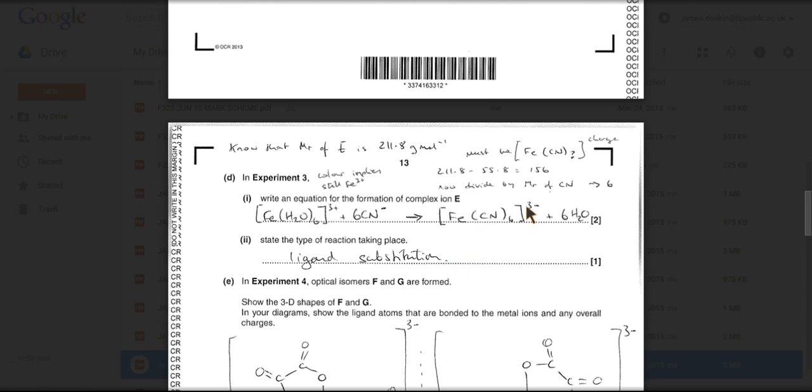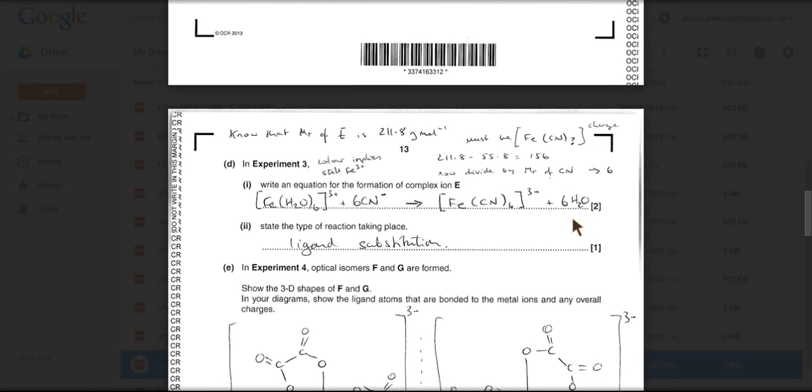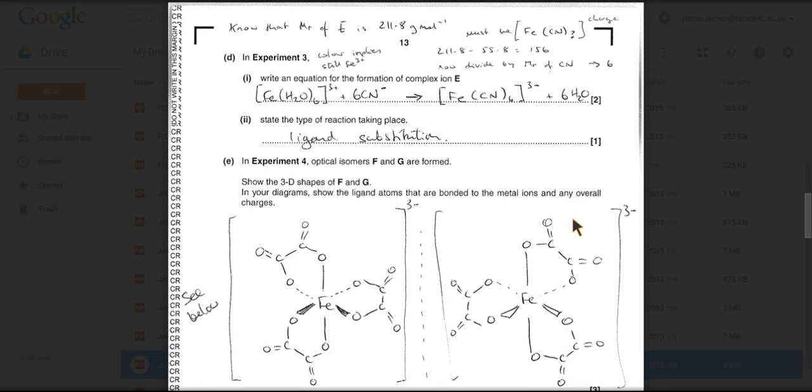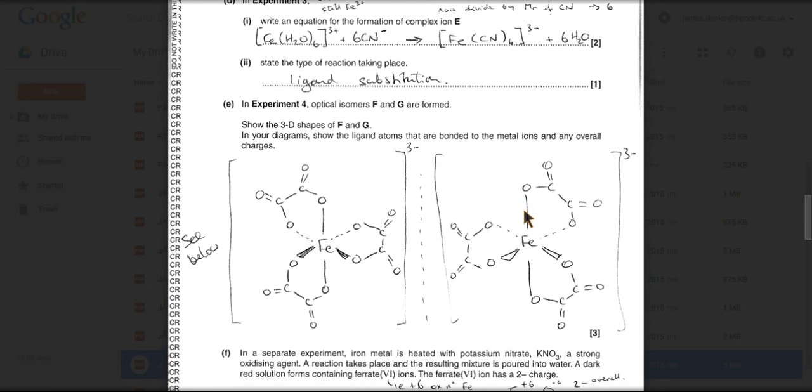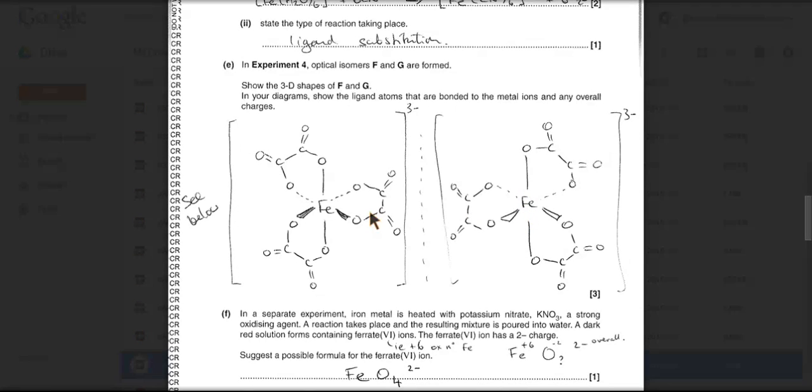So that's got a 3- charge and the six waters have been totally substituted. In experiment four, the optical isomers F and G are formed - draw the 3D shapes. So this is testing your ability to draw these optical isomers. So we've got a central Fe^3+ ion, so we're not going to show the charge of the iron, that's all taken into account by the overall charge there.